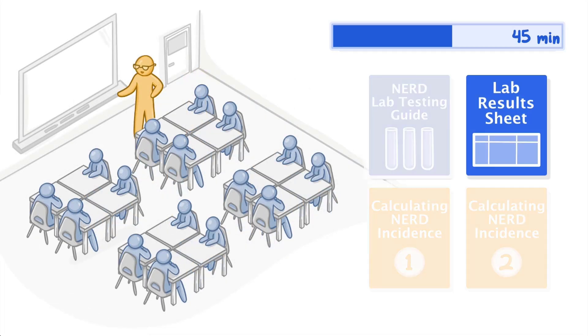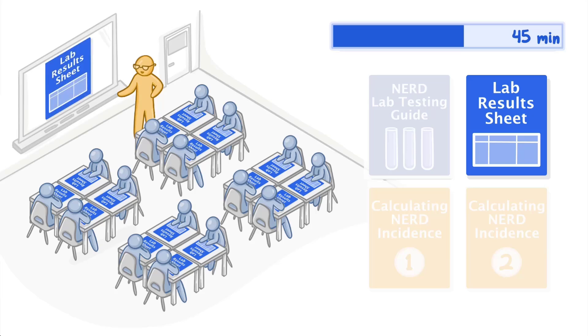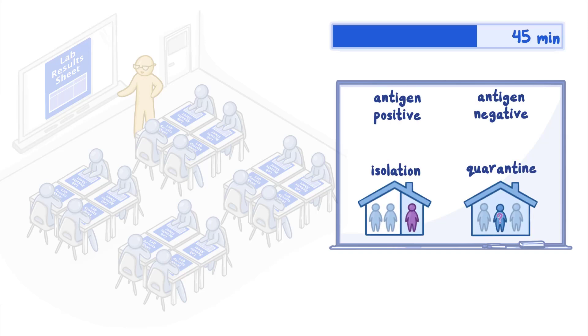After cleaning up, hand out a NERD lab results sheet to each student. Display a large version of the NERD lab results sheet on the board. Have each group share the information for their assigned test subjects with the class. After completing the table, have students agree on a recommendation for self-isolation or self-quarantine for each test subject as applicable.